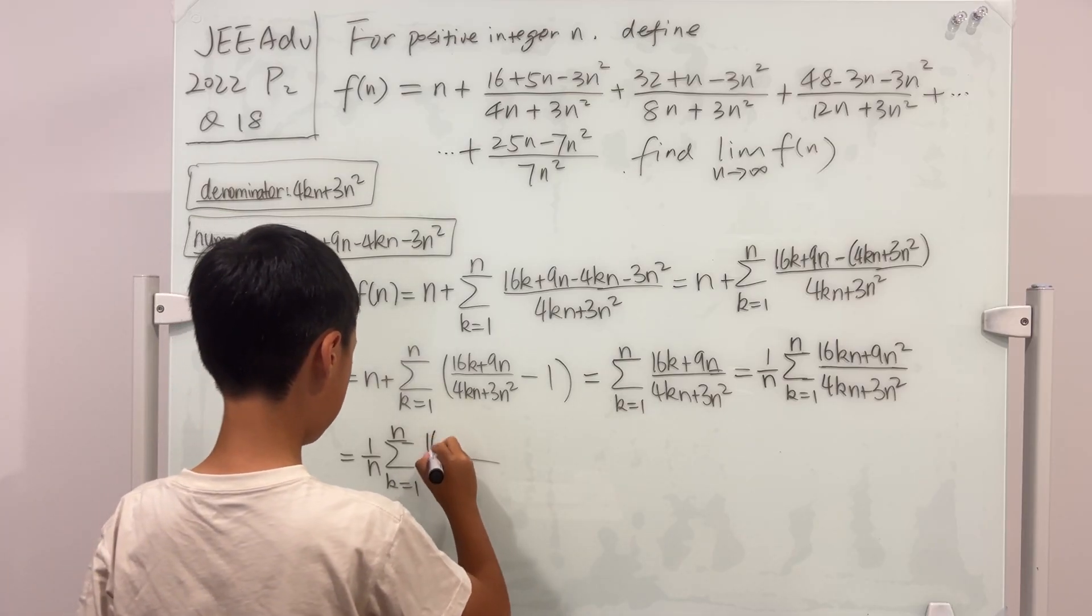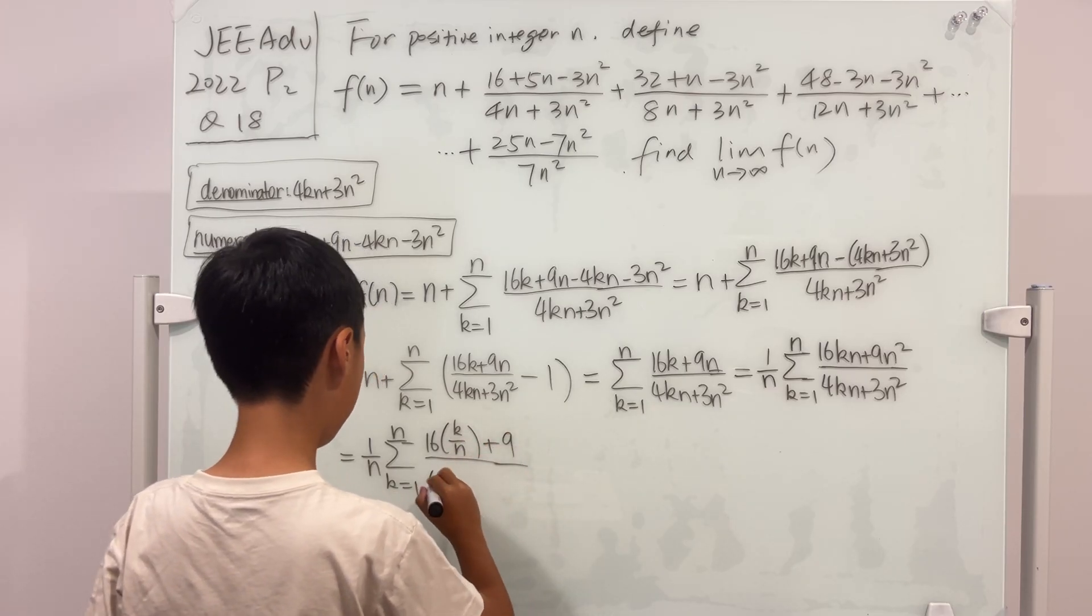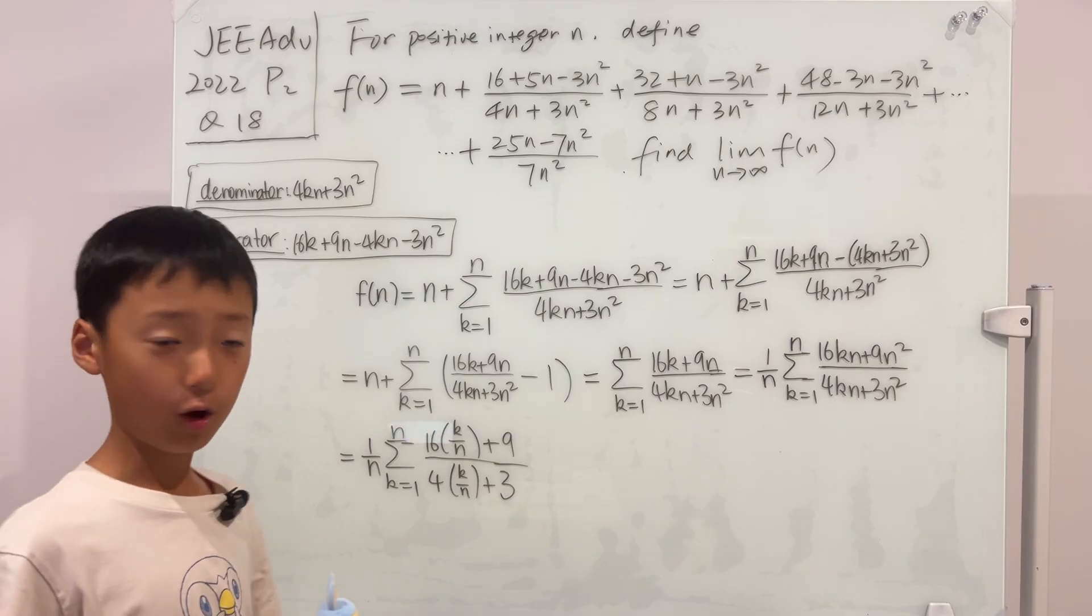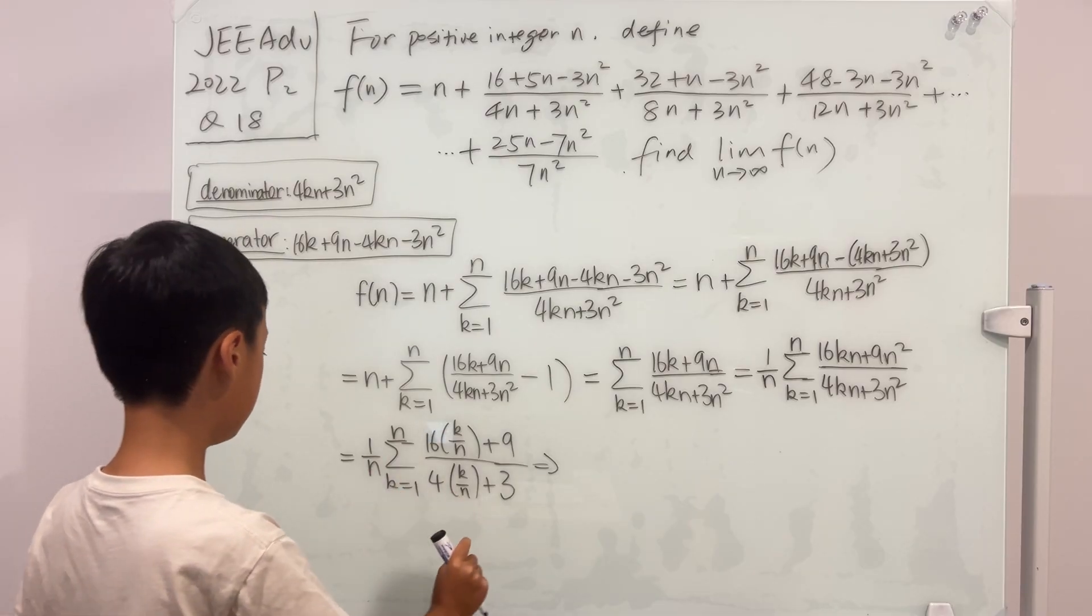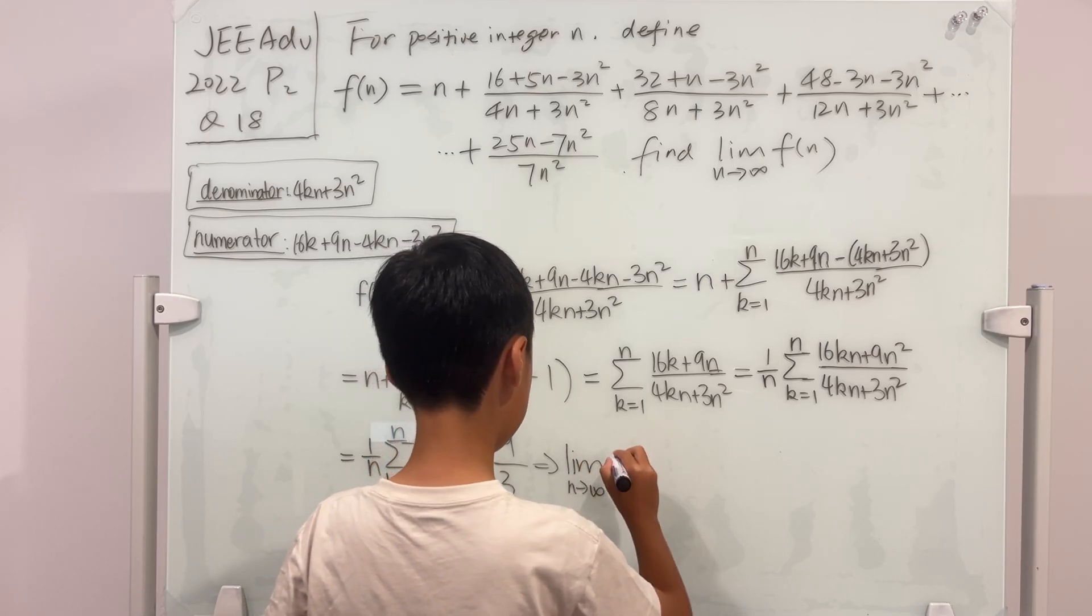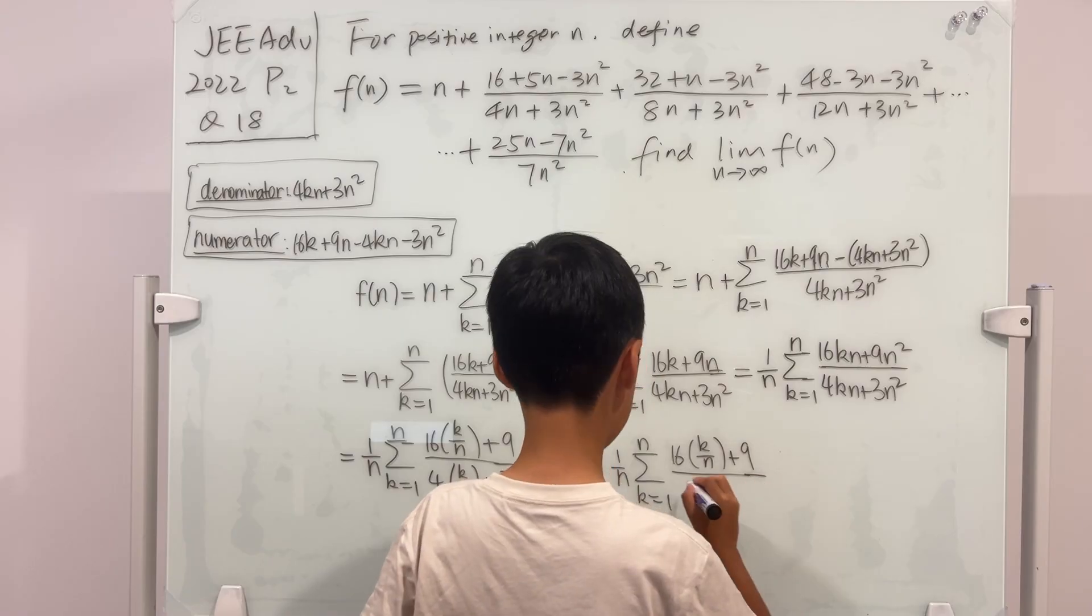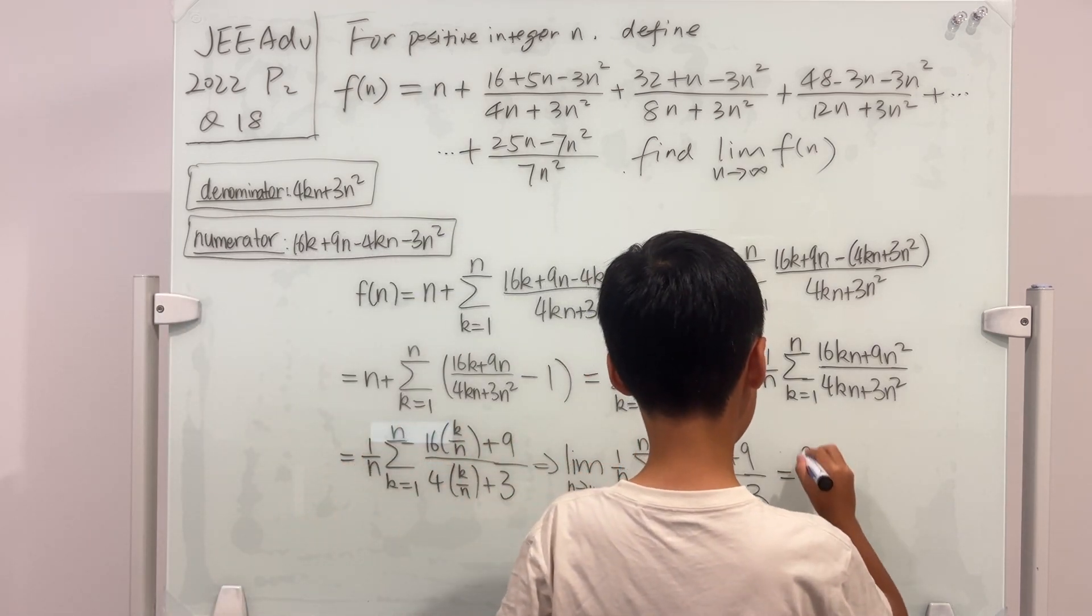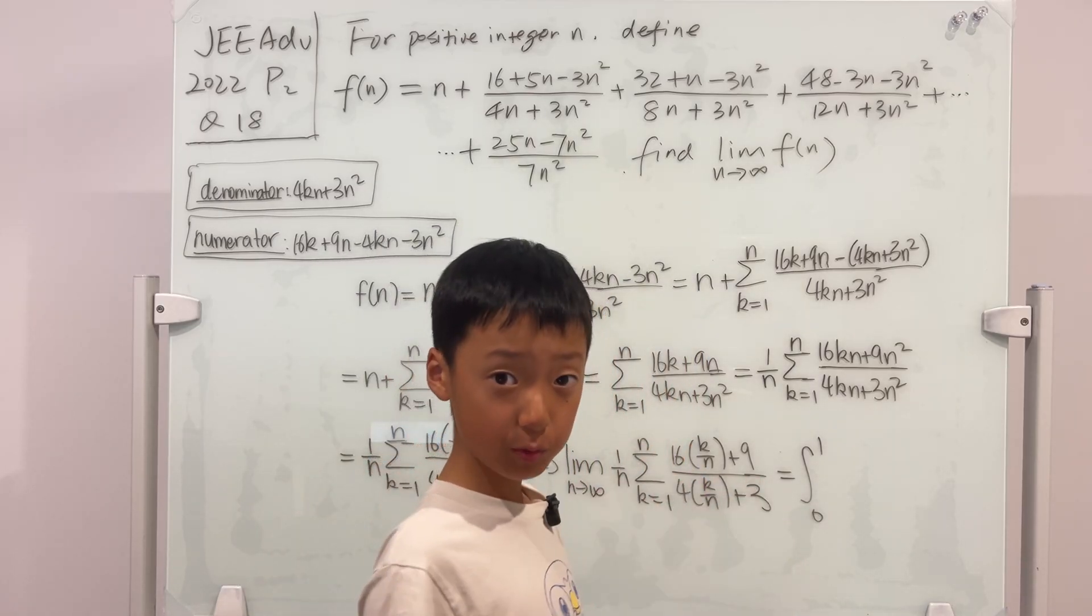So the top will be 16 times k over n plus 9, and the bottom will be 4 times k over n plus 3. So from this, if we take the limit as n goes to infinity of this, then we know that. The limit as n goes to infinity of this, and we can change it into an integral now. So this is actually equal to the integral from 0 to 1 of, we just change these k over n into x or any variable that you would like.